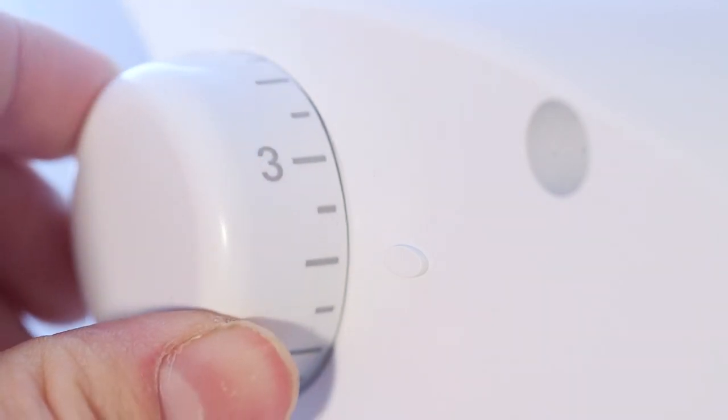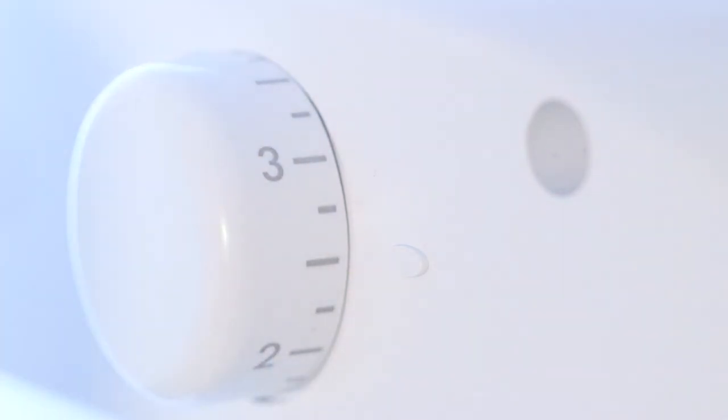However if the condensation turns to ice you should adjust the temperature on the thermostat. Slightly increase the temperature until ice no longer forms.